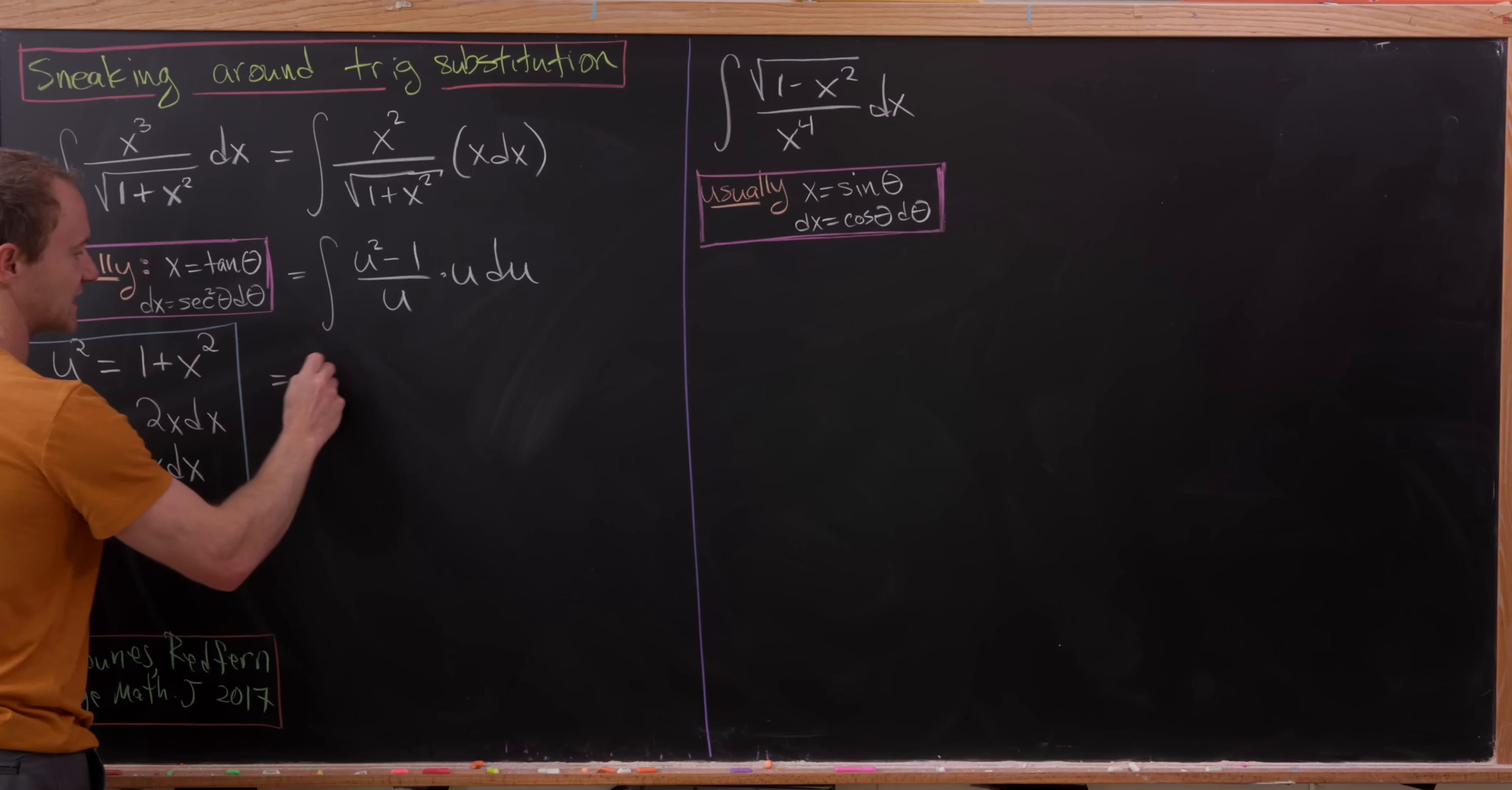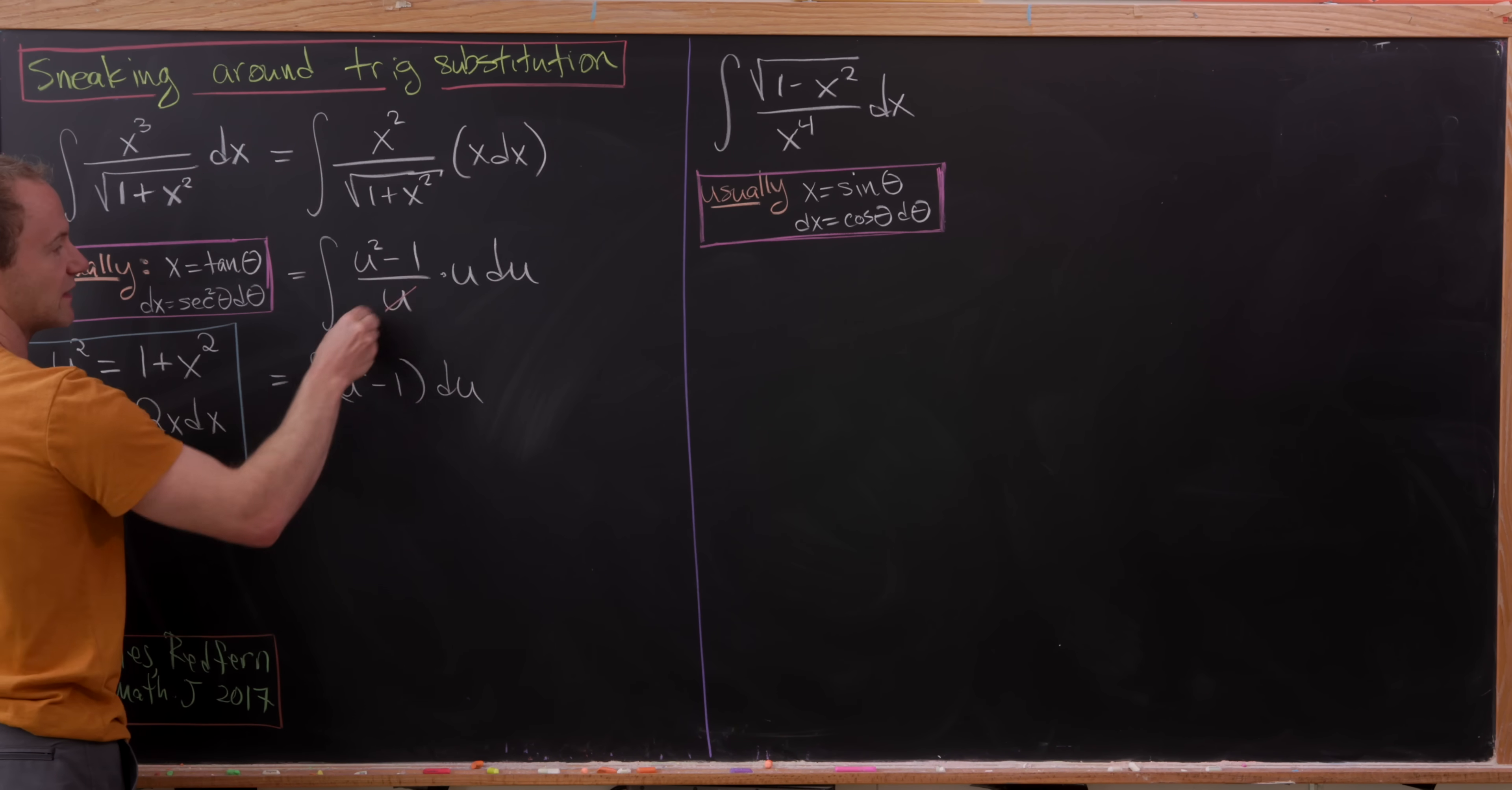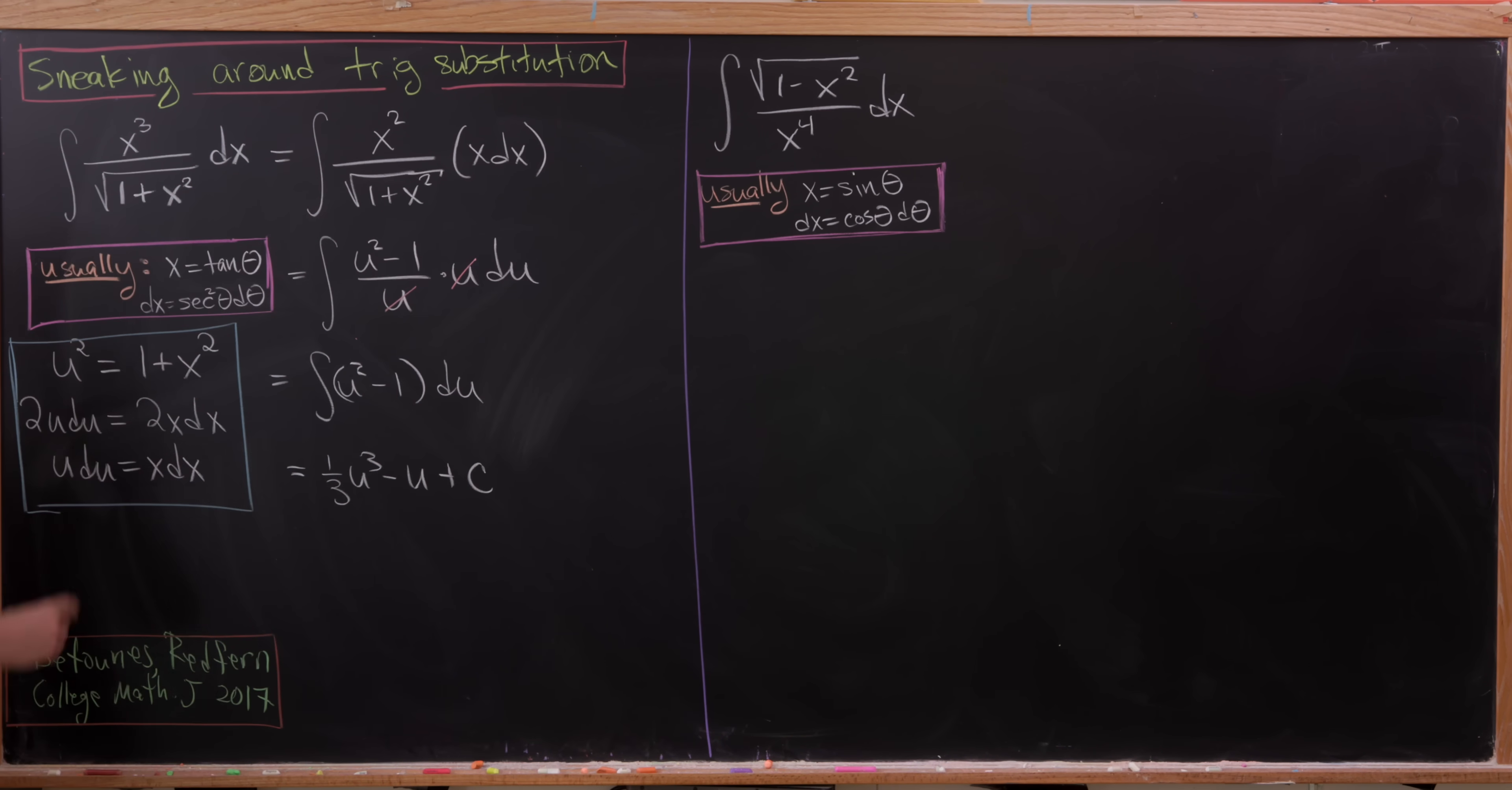But now, that's going to give us the antiderivative of u squared minus 1 du. Observe that those two u's cancel. This one right here in the denominator and this one right here in the numerator. But now we're left with something really straightforward. This is going to be 1 third u cubed minus u plus a constant.